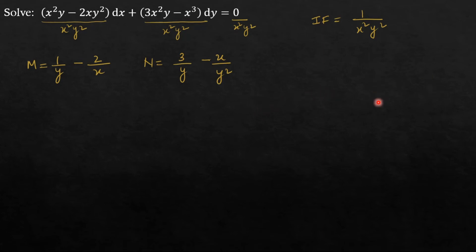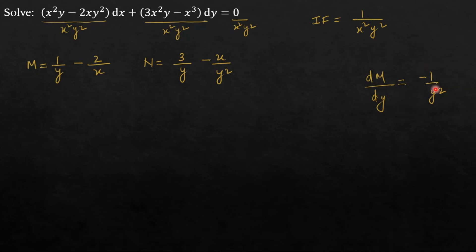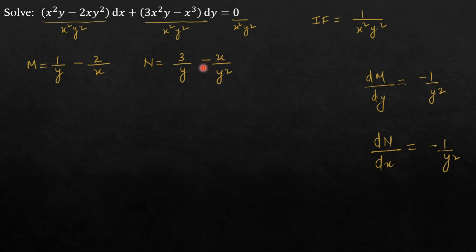After multiplication, the differential equation has been converted into an exact form. To verify: ∂M/∂y = −1/y², since the −2/x term vanishes when treating x as constant, and the derivative of 1/y is −1/y². Similarly, ∂N/∂x = −1/y², since the 3/y term vanishes when treating y as constant, and the derivative of −x/y² is −1/y². Both are equal, confirming the equation is now exact.